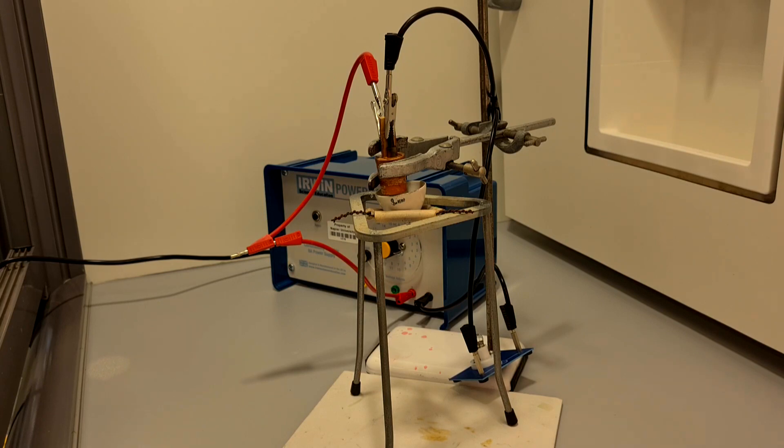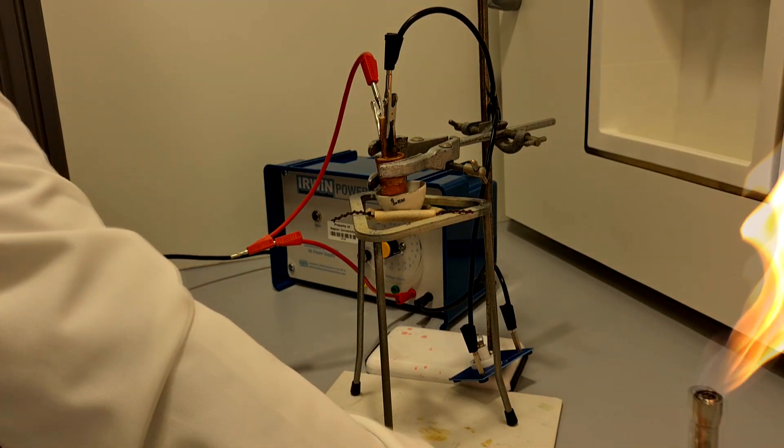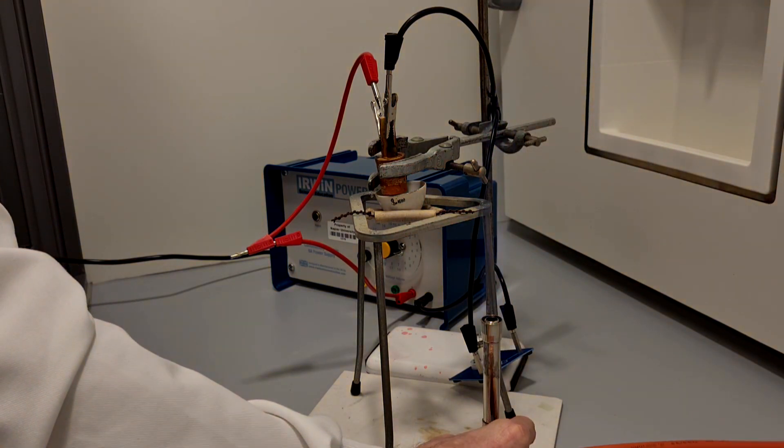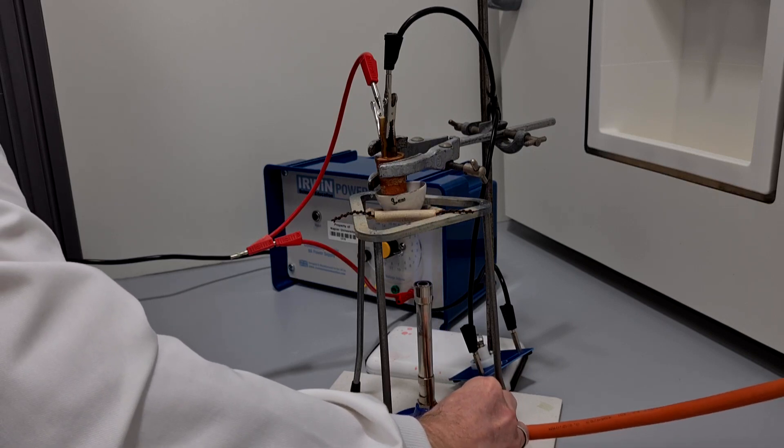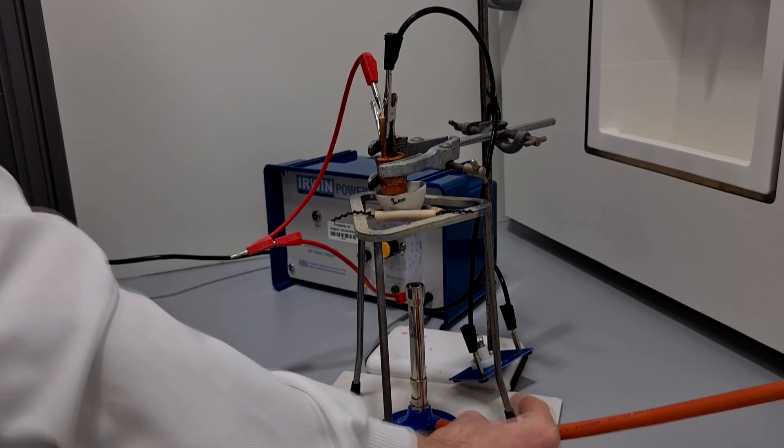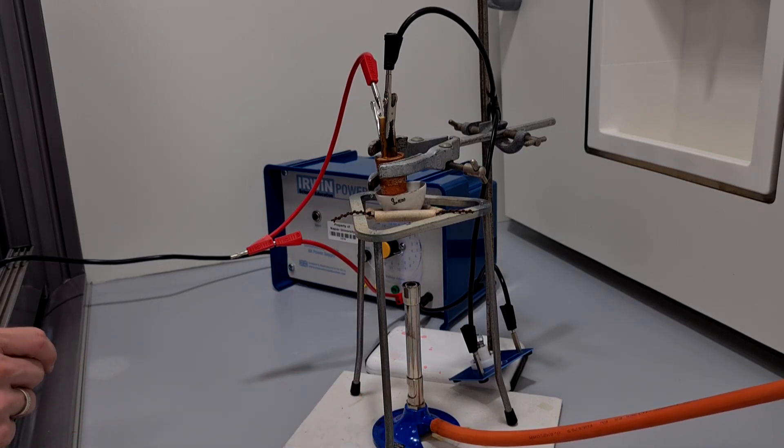So what I am going to do now is I'm going to place the Bunsen burner under the crucible, turn it into a gentle blue flame, and we'll gently heat the zinc chloride powder and we'll see if we see any change in the conductivity of the zinc chloride.